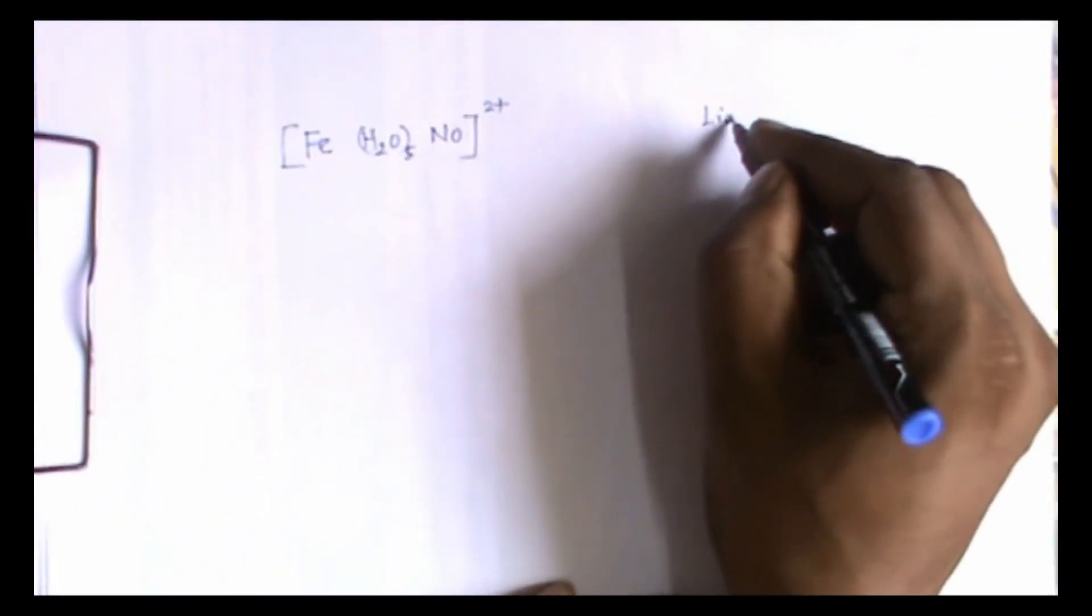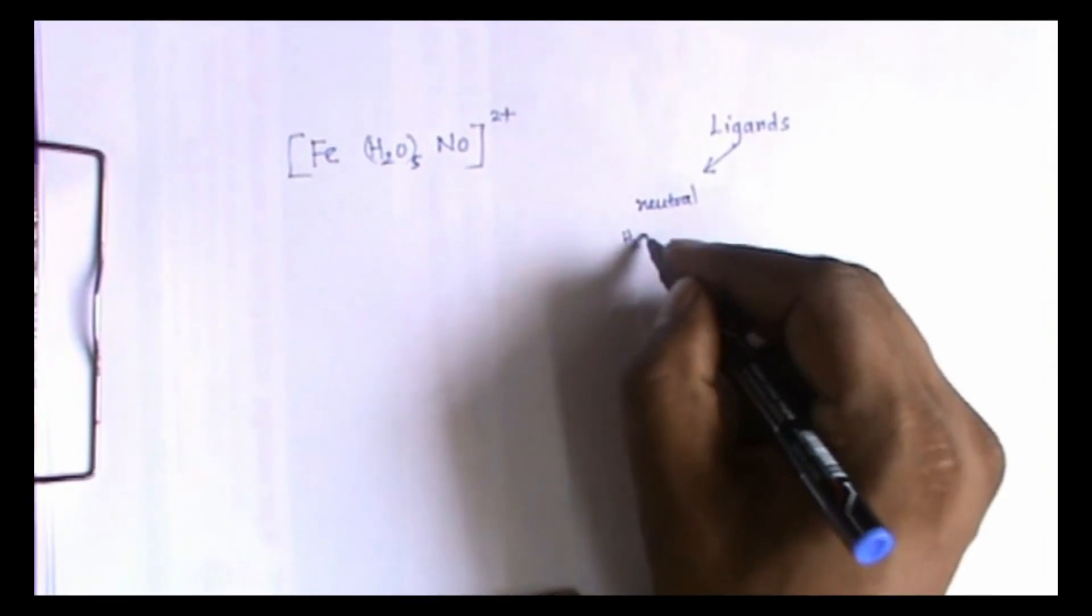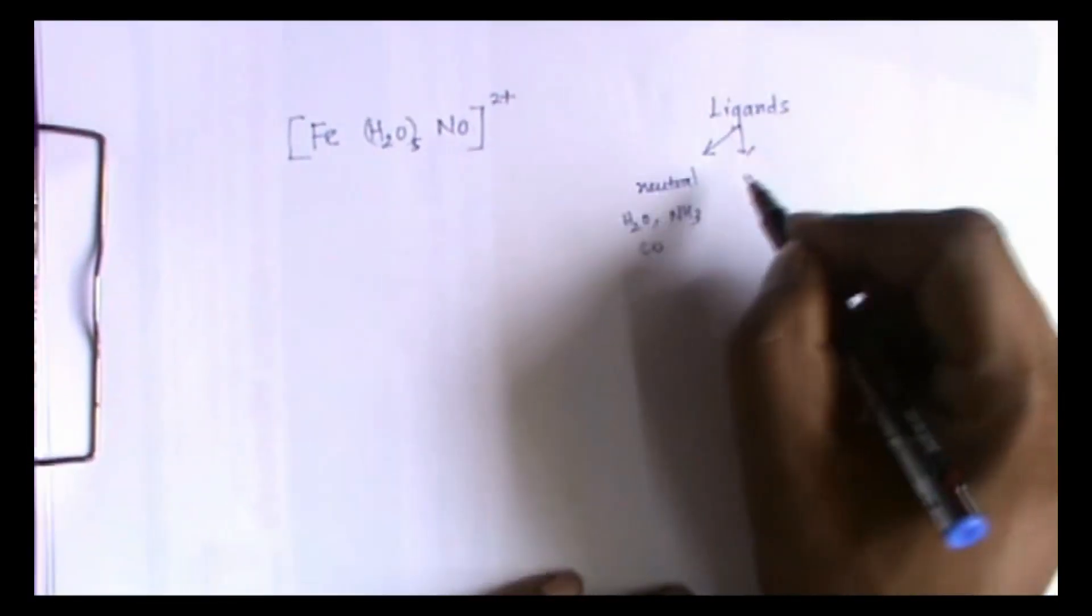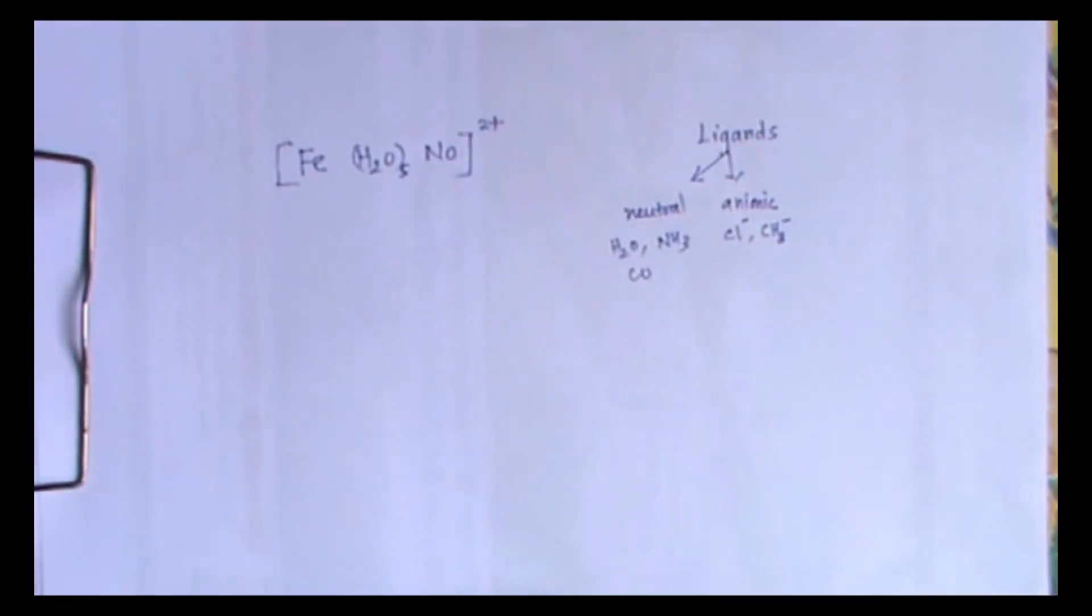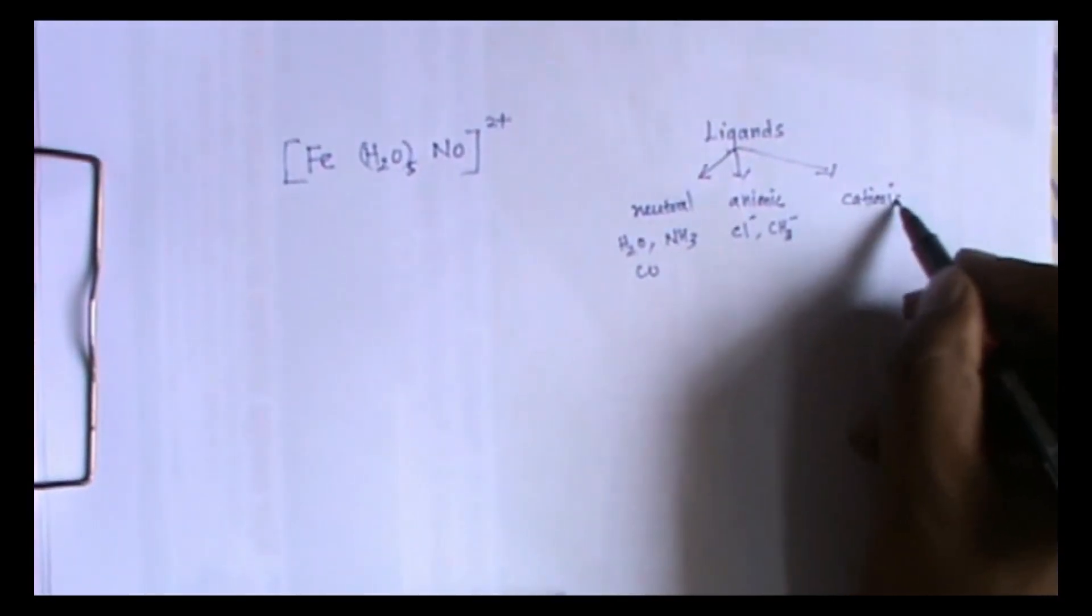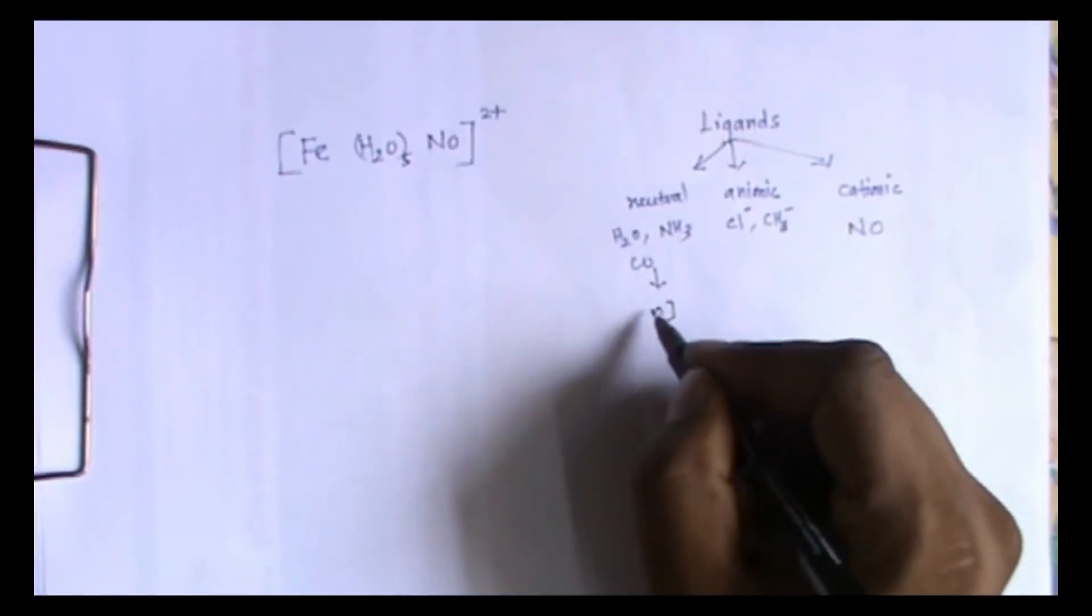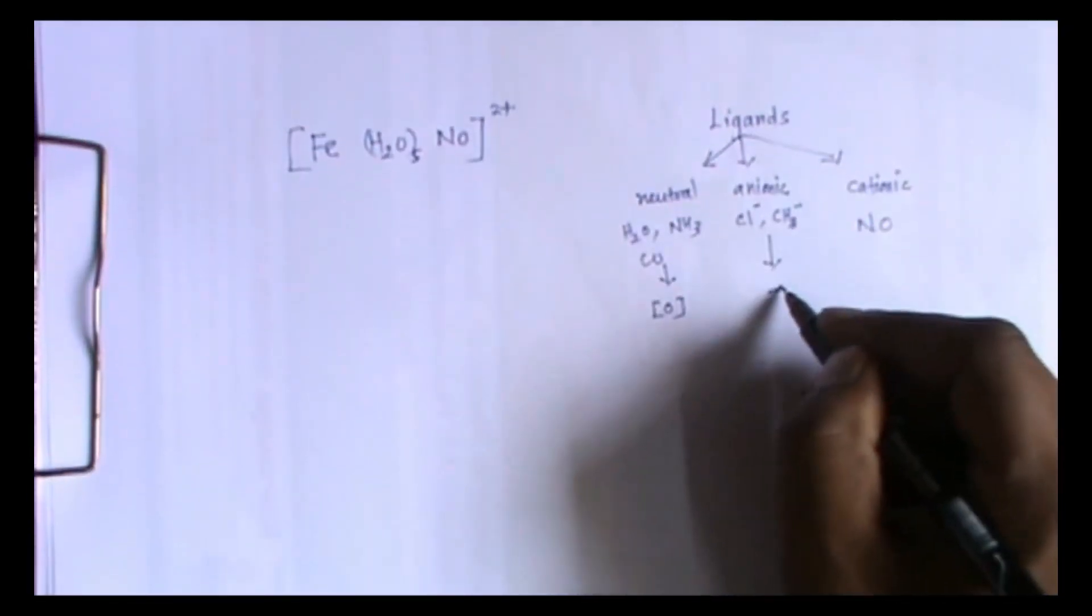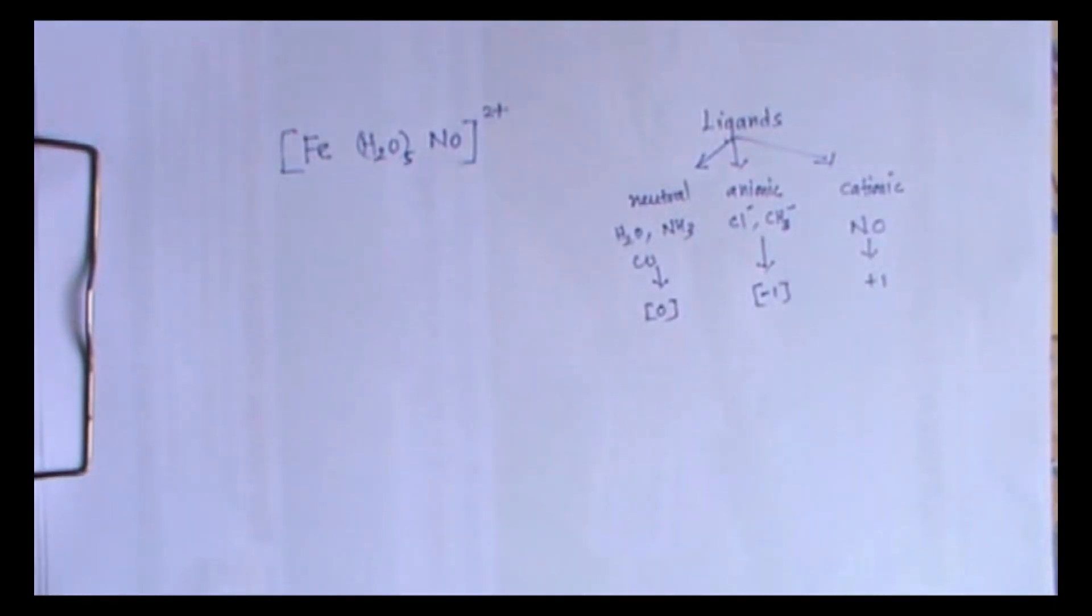The ligands can be classified into three types. First one is neutral like water, ammonia, CO. They are neutral ligands. Next one is anionic ligands like Cl minus, CH3 minus. Last one is cationic ligand. Here we have NO, nitrosyl ligand, which is a cationic ligand. When you have neutral ligand you have to consider zero for them. Anionic ligand you have to consider minus one to find out the oxidation state. Cationic ligand you have to consider plus one.